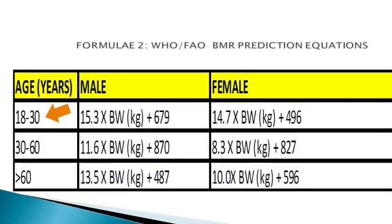For a male client aged between 18 and 30 years, their basal metabolic rate is calculated as 15.3 multiplied by body weight in kilograms, the product of which is then added to 679 kilocalories.